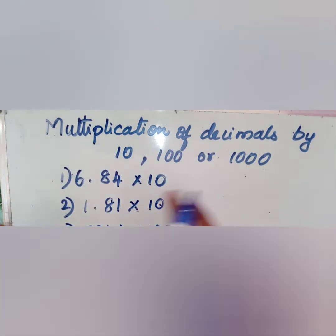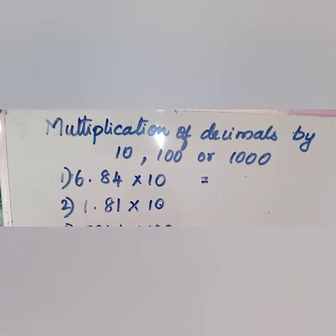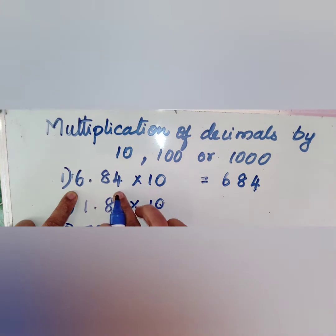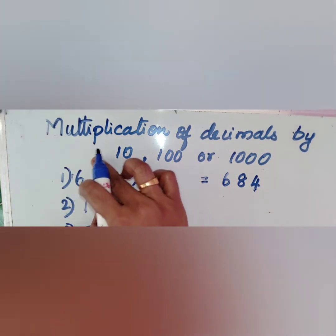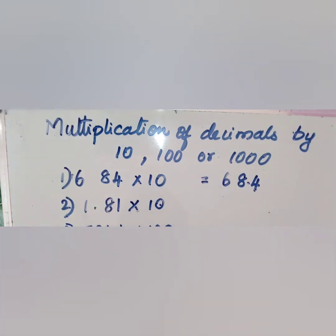Our first question is 6.84 into 10. Here we are going to shift the decimal point to one place since we have 10. The answer will be 68.4. I will show you by multiplying 6.84 with 10 now.